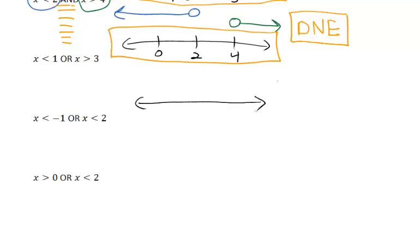So for this first or example, we've got x is less than 1 or x is greater than 3. So if here's 0, here's 1, and here's 3, starting with x is less than 1, we go from 1 down. And x is greater than 3, we're going from 3 up.